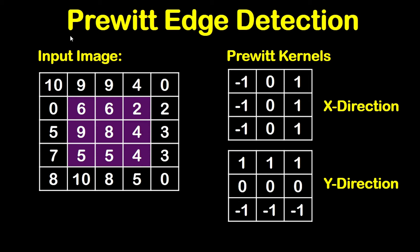In this tutorial, we are going to show a solved example on Prewitt edge detection using this input image and these Prewitt kernels — the kernel of the x-direction and the kernel of the y-direction. We will apply the algorithm on this highlighted region in the image. So let's see an example.